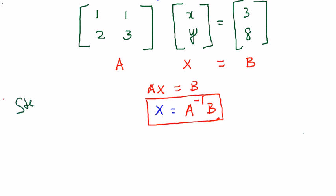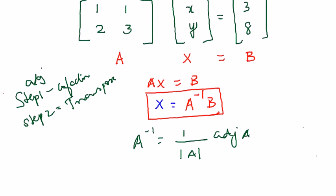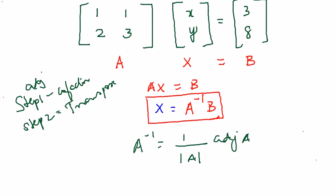So as usual we have two steps. Step 1, find the cofactor. Step 2, do the transpose. Always remember these two steps for finding the adjoint of any matrix. And then after we find the adjoint, the formula for A inverse is 1 by mod A into adjoint of A. And also we have to ensure that mod A is not equal to 0.